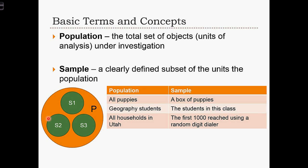If we went out and collected all the units in this area, that would be sample 2. If we collected here, that would be sample 3. For any given population, we can take different samples out of it. For example, the population could be all the puppies in the world, but a sample is a box of puppies.